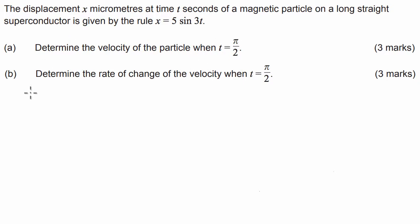First of all what we need to understand, let's start with part A here. First of all what we need to understand is the velocity of a particle with respect to time can be found by taking the differential of displacement with respect to time.